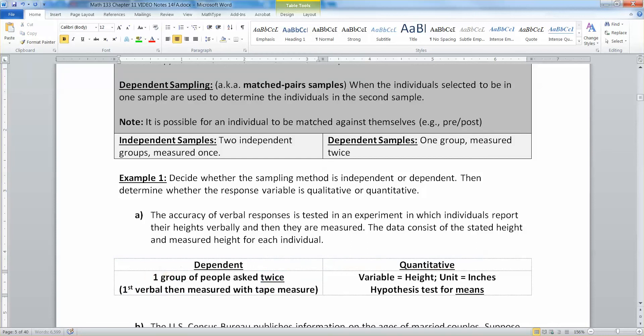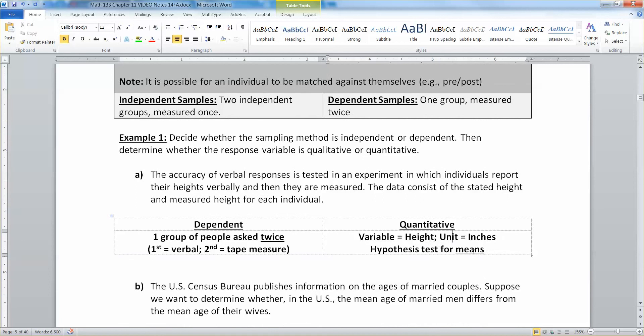They're measuring with the tape measure. That means that height is what your variable is. So your variable is height. The unit for it is inches and that means you're going to be doing a hypothesis test for the means because this is quantitative, not qualitative. Quantitative goes with means.